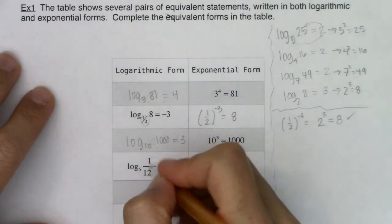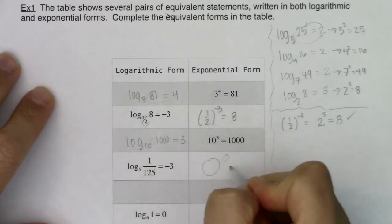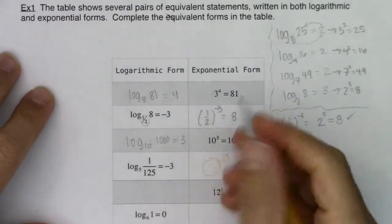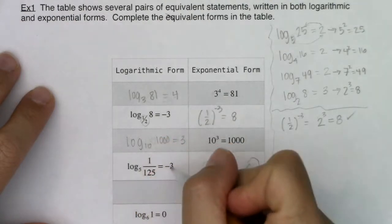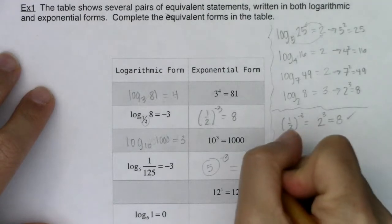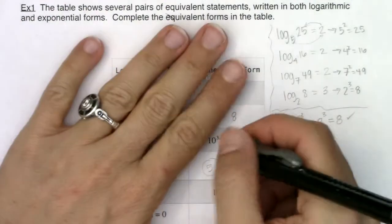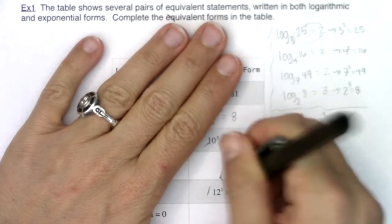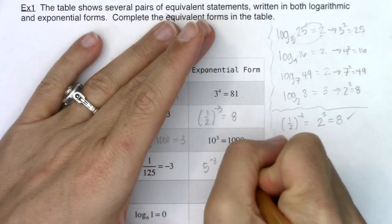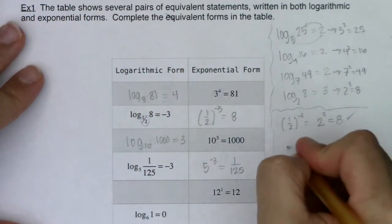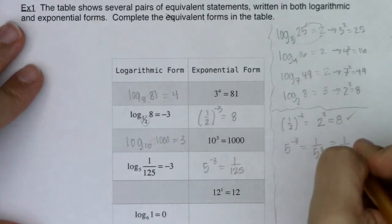Moving along: log base 5 of 1/125 equals negative 3. I want to write this in equivalent exponential form. The base of my logarithm is the base of my exponent. The logarithm equals the exponent, so that's negative 3, and 1/125 becomes the argument. So we get 5 to the negative 3 equals 1/125. We can check: 5 to the negative 3 is 1 over 5 cubed, which is 1/125.